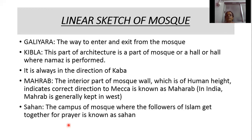The next part is Qibla — it is the part of a mosque or hall where Namaz is performed. Namaz is the Muslim prayer, and it is always in the direction of Kaaba. Kaaba is the sacred place of Muslims.